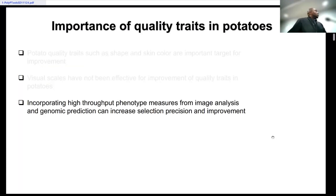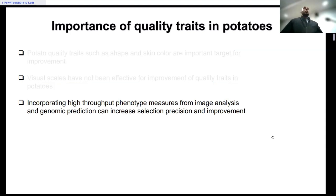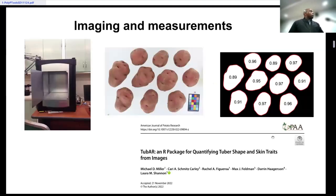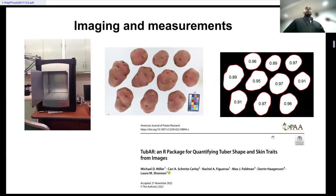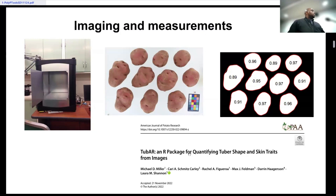To improve on these traits, there is need to incorporate high-throughput phenotyping like image-based analysis to increase selection precision and improvement. In our lab, we've been able to develop an image tool — an image box set up with a camera — that helps generate images used to analyze different quality traits. The paper describing this tool in detail has been validated against visual scores and has significantly outperformed the traditional visual score.